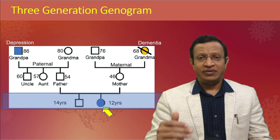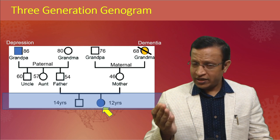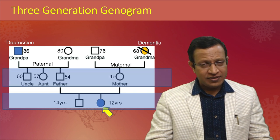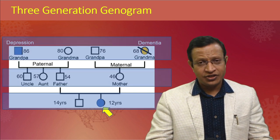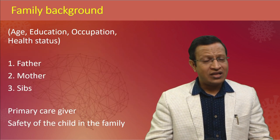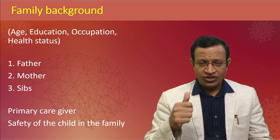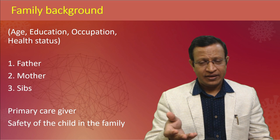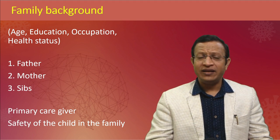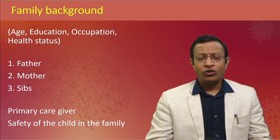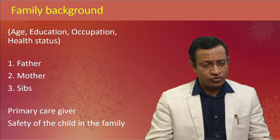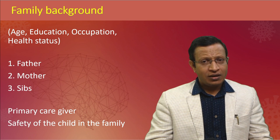The first generation in the genogram is the child — the index child, represented by a circle for female and a square for male. Parents are the second generation, and grandparents the third. For each person, ask for age, education, occupation, and health status. Ask who is the major person spending time with the index child, and check for any safety issues — whether the child is being abused within the family.